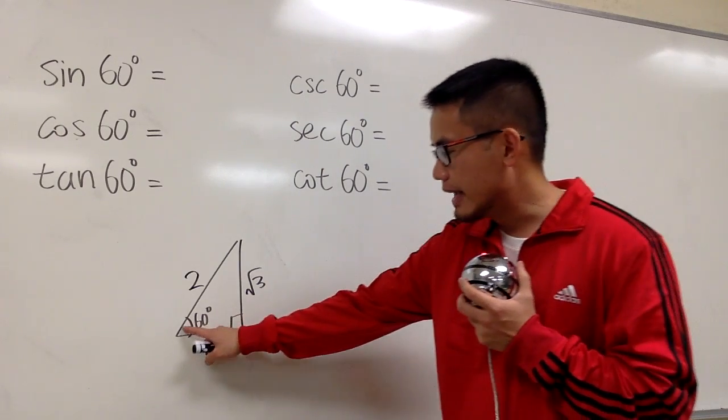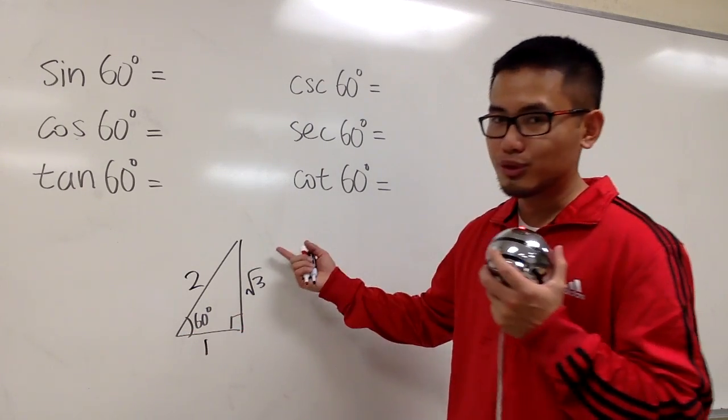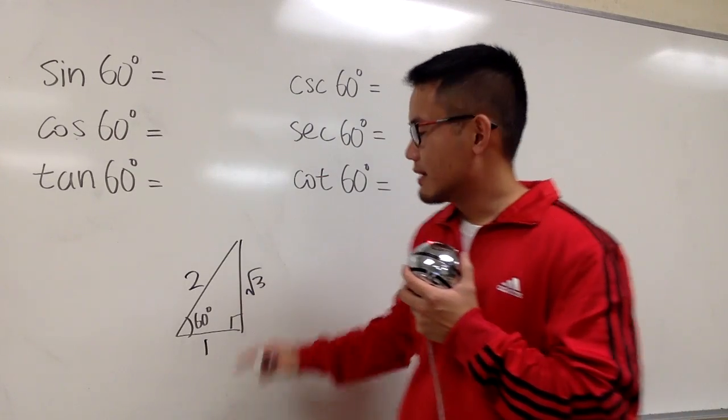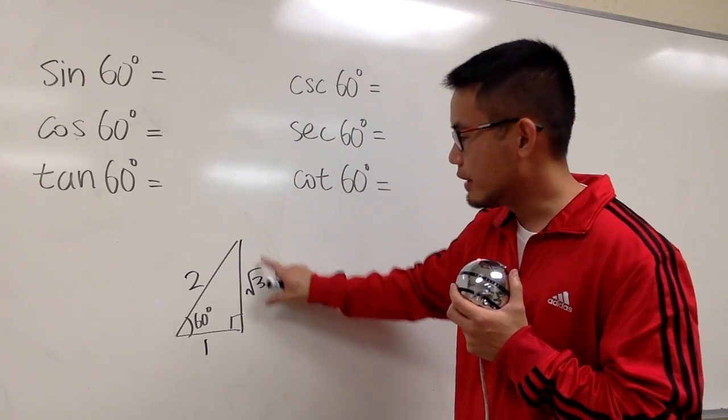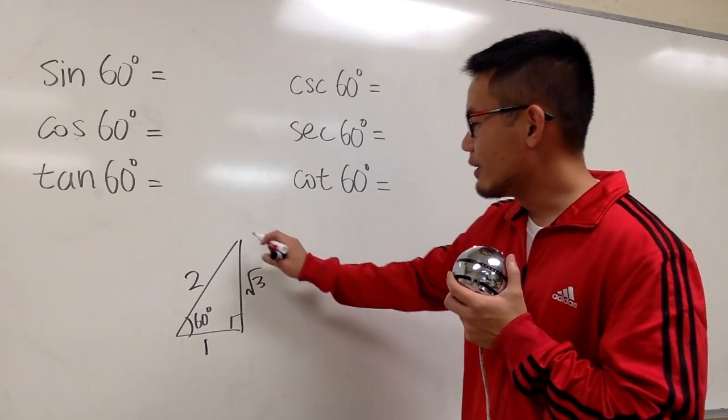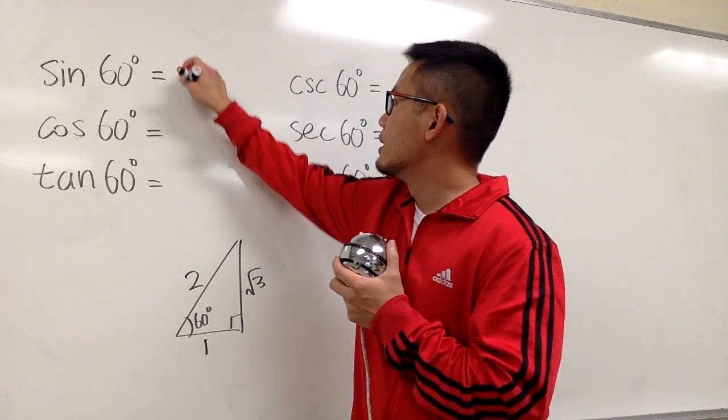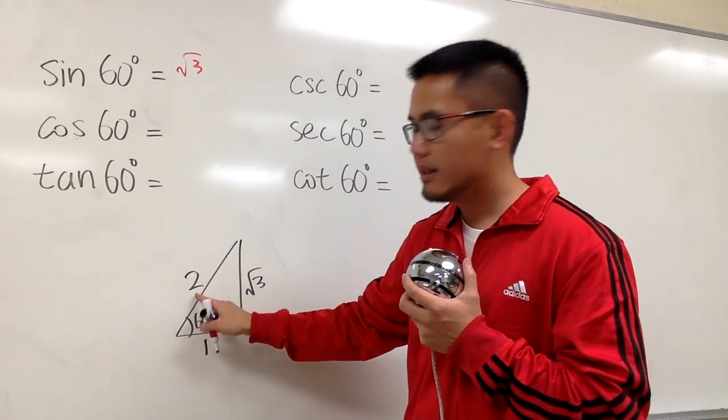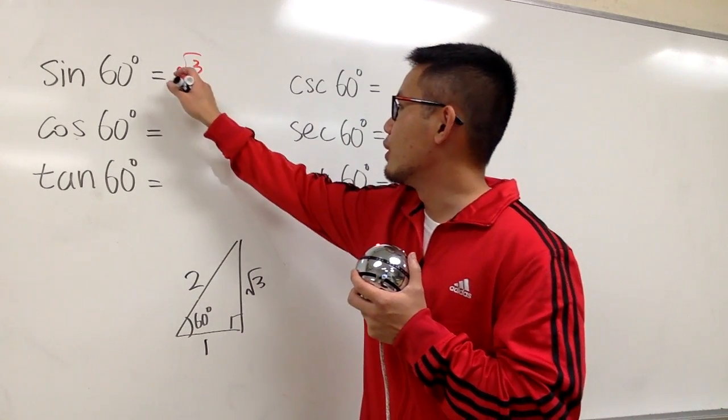And now, you see, this is the angle. We can just do the usual business. For sine, it will be the opposite, which is this right here. This is the opposite toward the 60 degrees. So, opposite is square root of 3. And then we divide it by the hypotenuse, which is 2. So, square root of 3 over 2, like that.